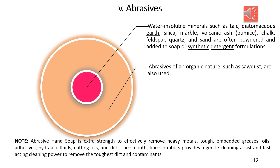Abrasives can also be of organic nature; an example is sawdust, which can also be used as fuel. Historically, before refrigeration, sawdust was used to keep substances frozen during summer.